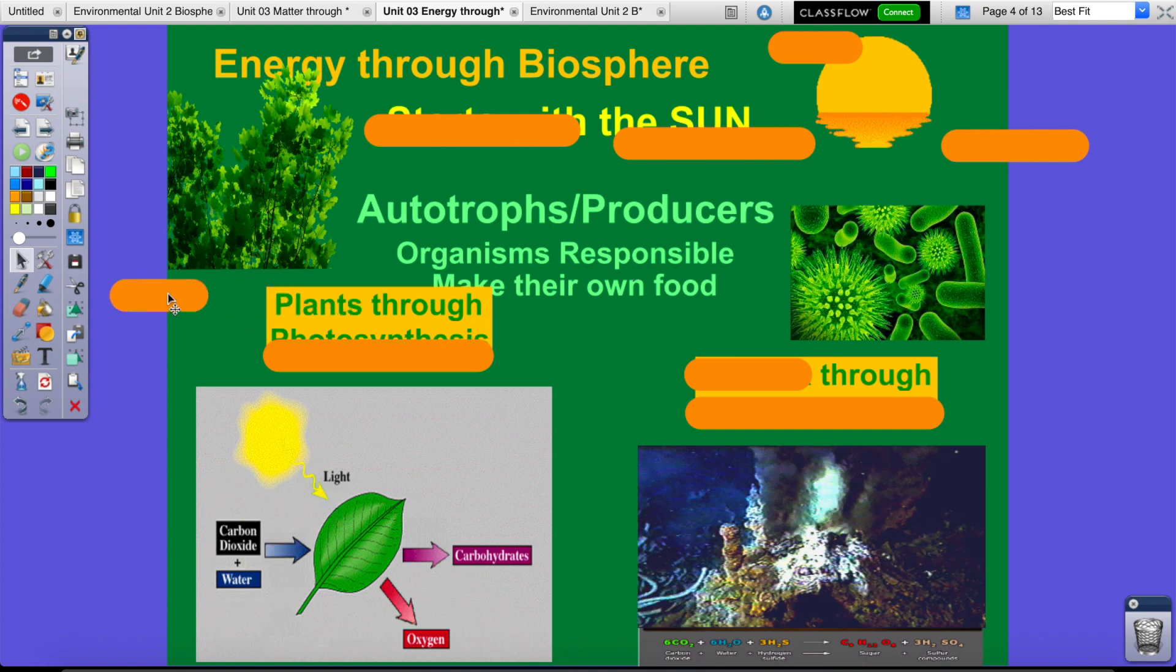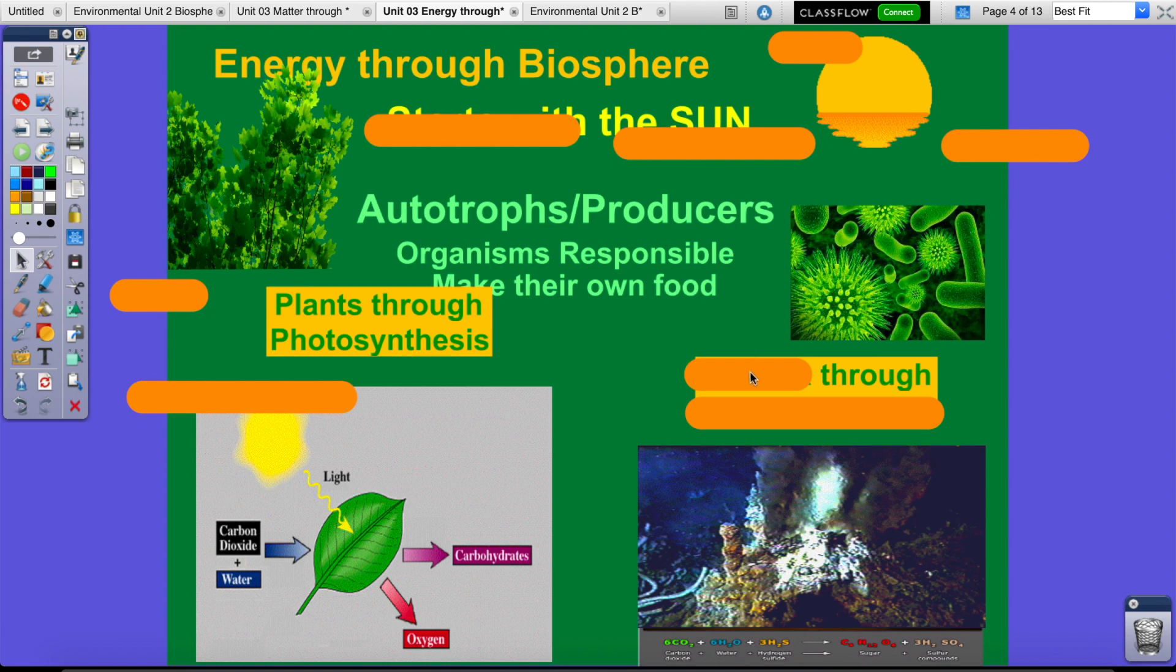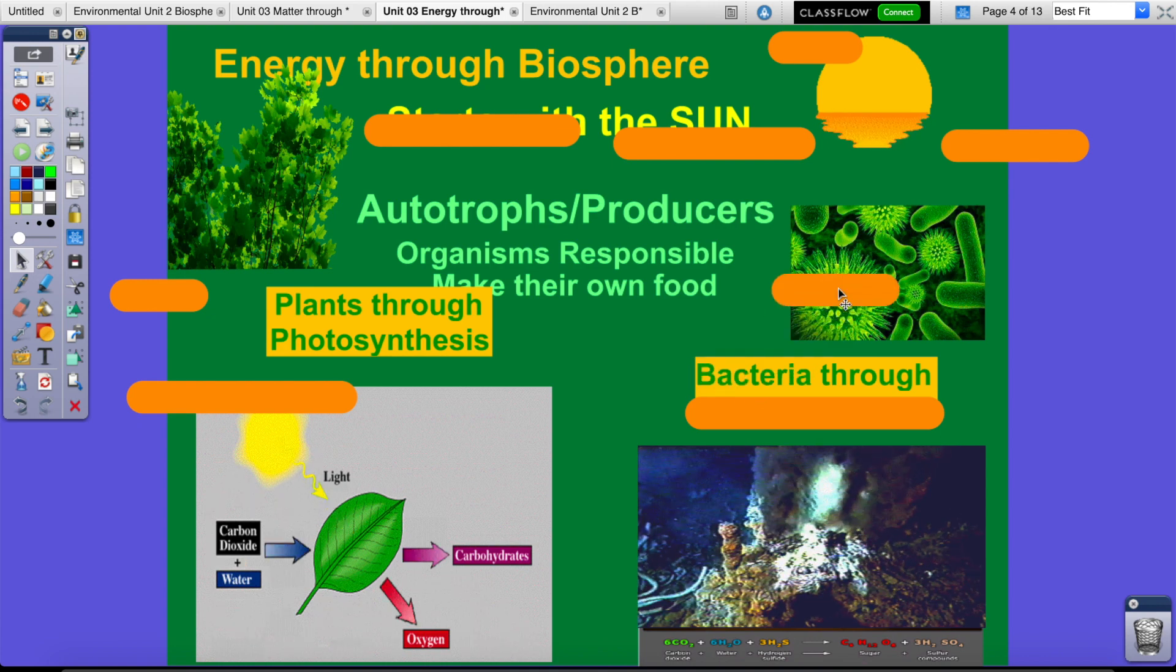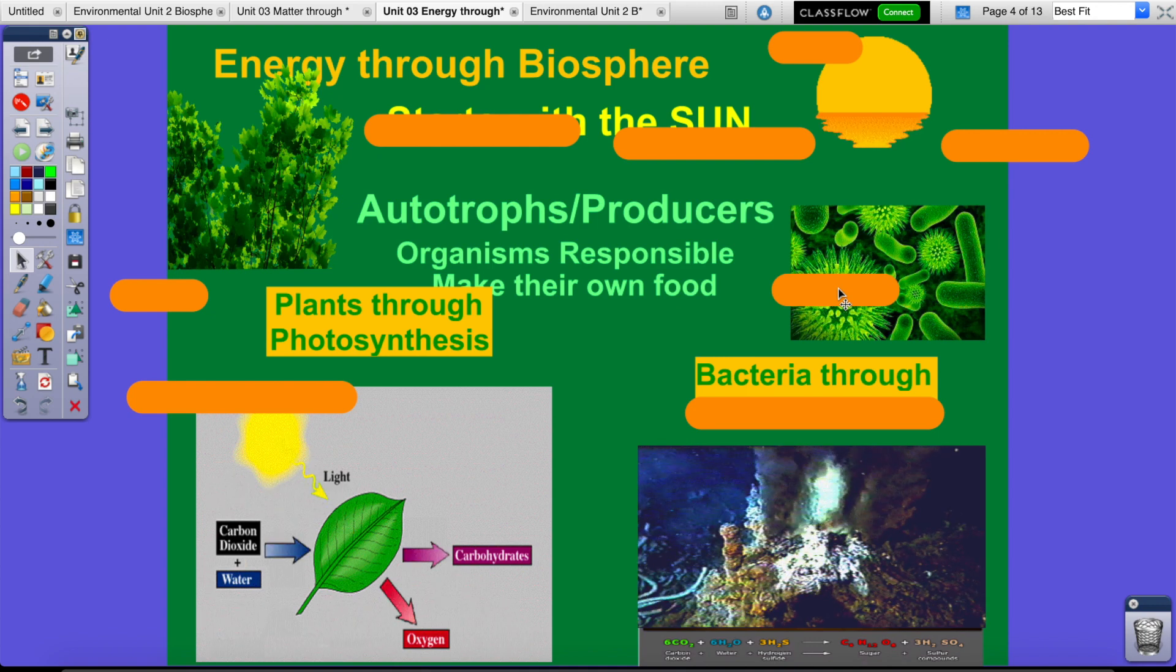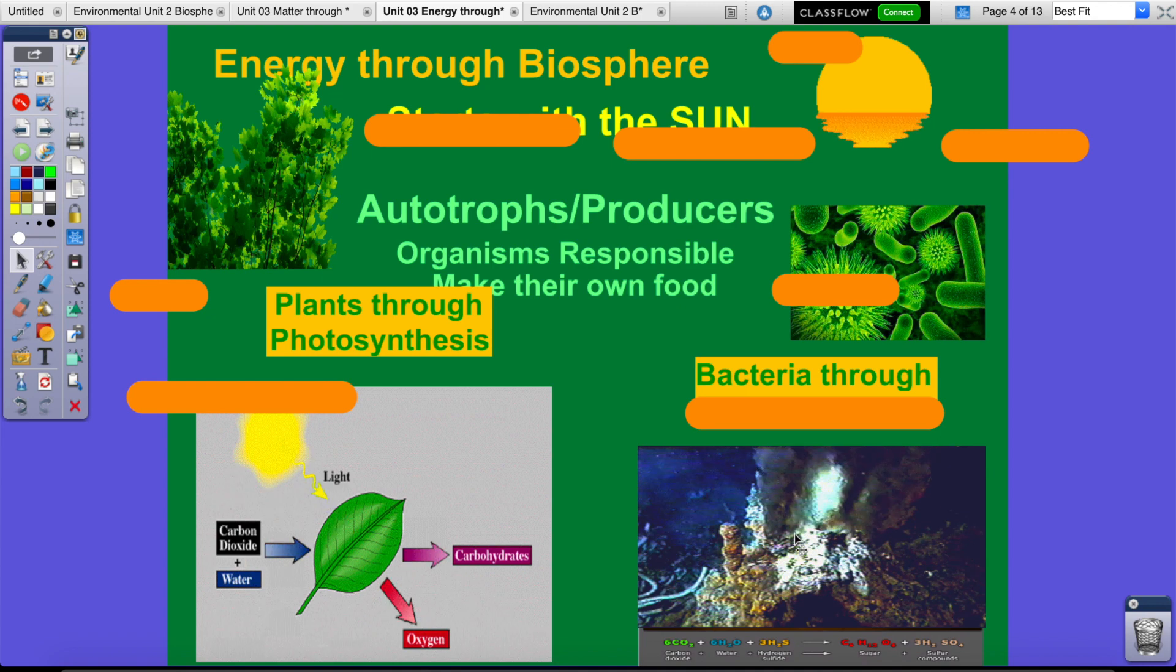When plants use the sun's energy, that process is called what? To make their own food. Photosynthesis. So it says plants through photosynthesis, right? But then there's other organisms, which are bacteria, who use light, not sun, and make food energy as well. Anybody know what that process is called? Look at the picture. There's the picture at the bottom right. What is that? Hydrothermal vents. Bacteria lives in these vents, and they use the heat to create what? Food. What's that process called? Something synthesis. Correct. Chemosynthesis. Bacteria through chemosynthesis.